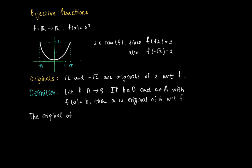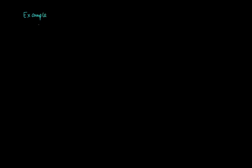We can also speak of the original set of b, which is just the set of all originals of b with respect to f — it includes all small a's with image b. For example, for f(x) = x² with natural domain ℝ, the original set of 2 is {−√2, √2}.